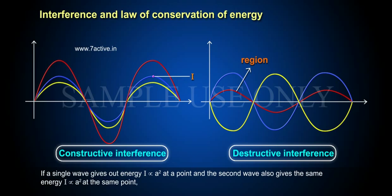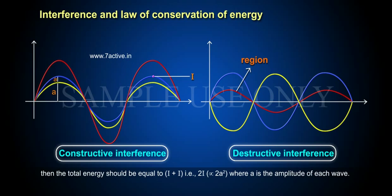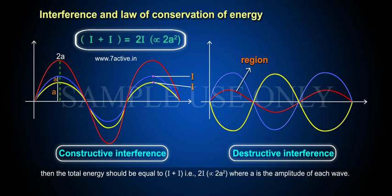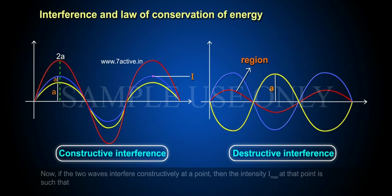If a single wave gives out energy I, which is directly proportional to A squared at a point, and the second wave also gives the same energy I, directly proportional to A squared at the same point, then the total energy should be equal to I plus I. That is, 2I is directly proportional to 2A squared, where A is the amplitude of each wave.